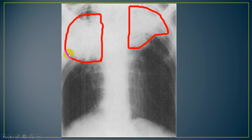This chest X-ray shows upper lobe fibrosis in a patient with ankylosing spondylitis.